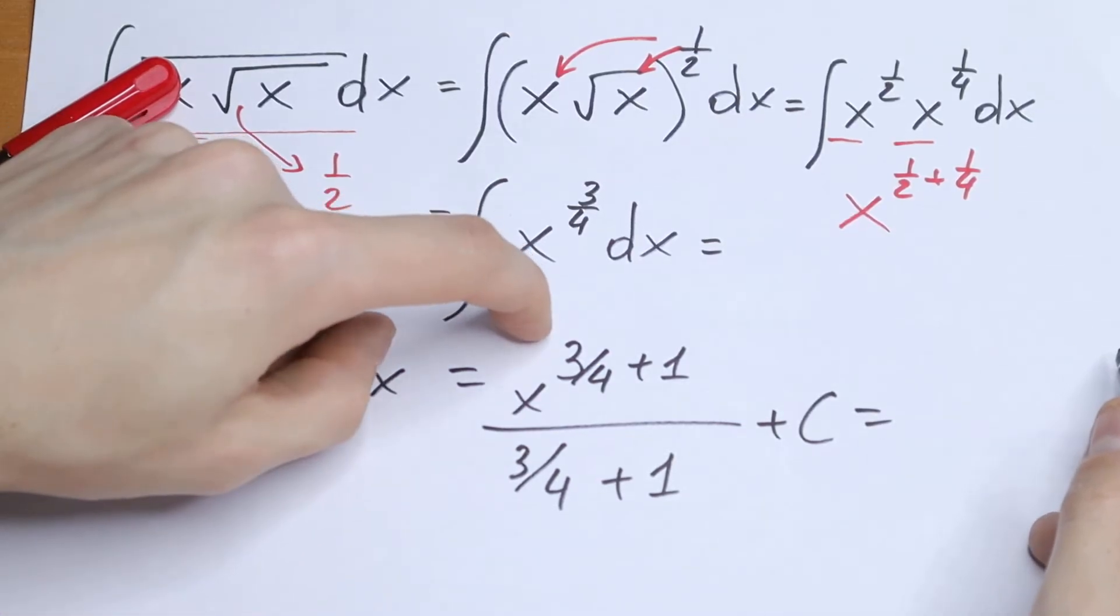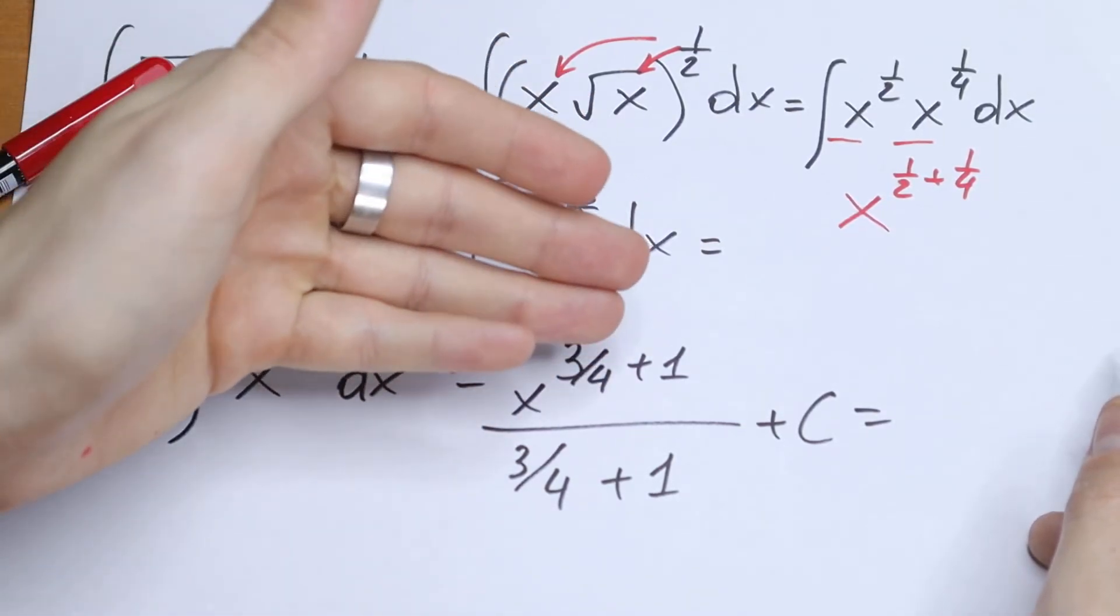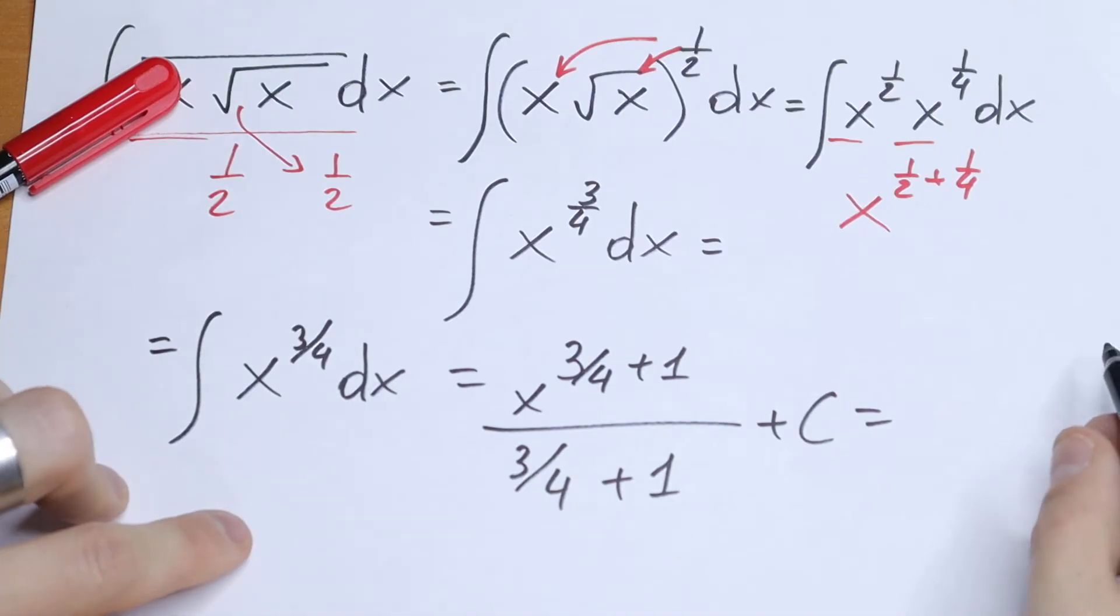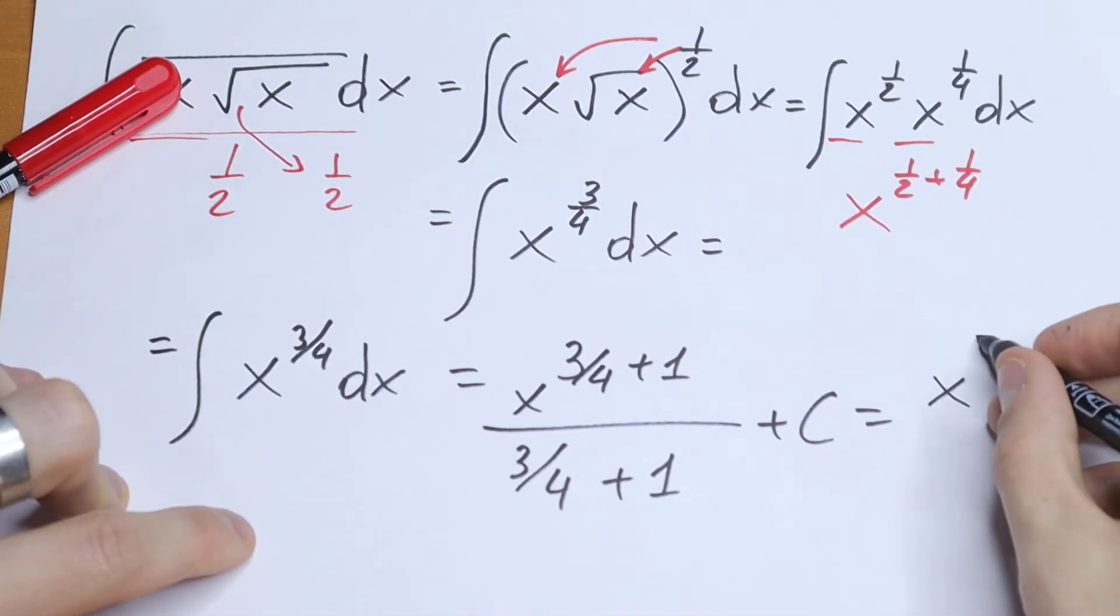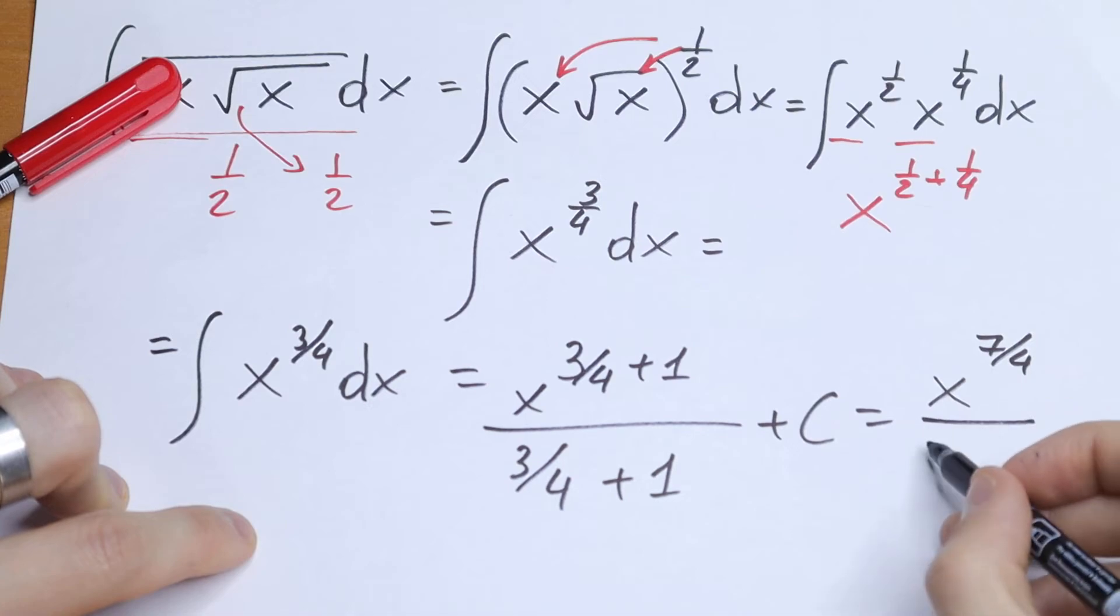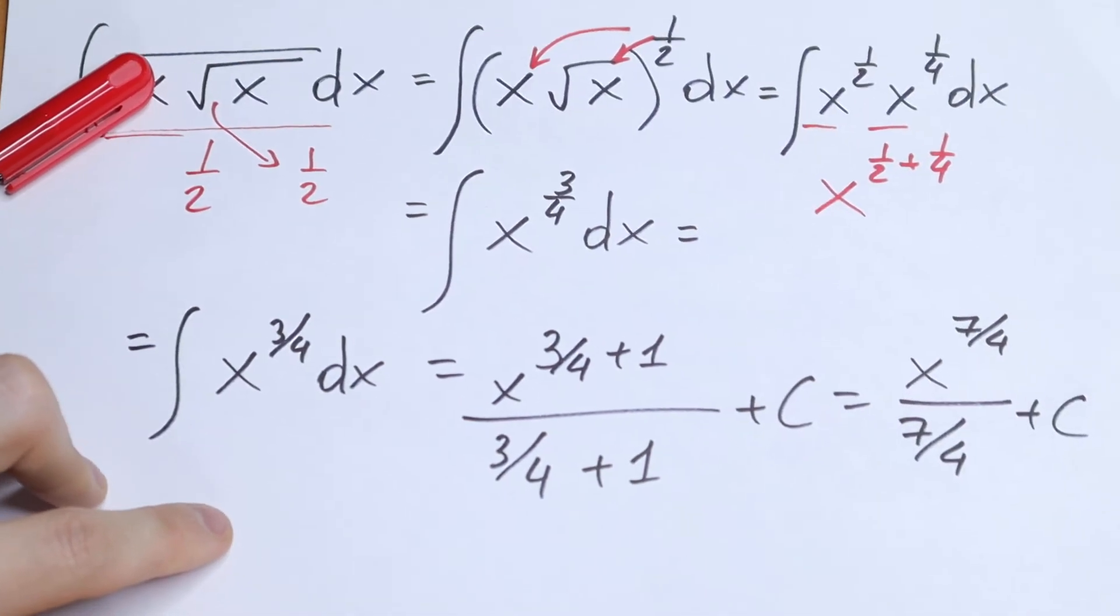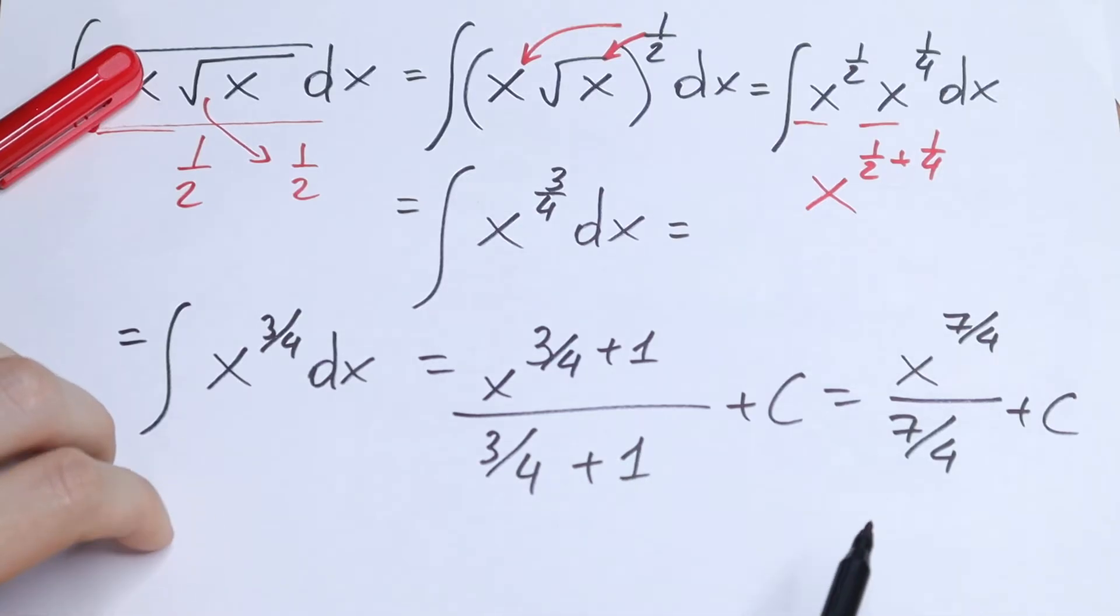And the last step, let's simplify this. Let's add this 3 fourths plus 1, we will have x to the power 7 fourths and dividing by this 7 fourths, and plus c. Just simplify this.